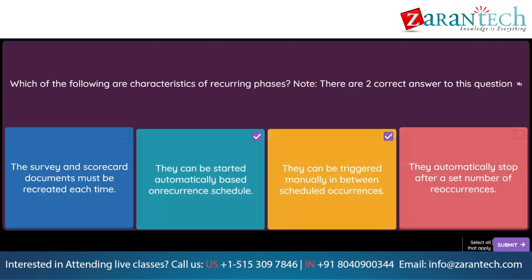Question. Which supplier data elements can be imported via SM administration? Note, there are three correct answers. Option 1: Primary supplier managers for each organization. Option 2: Approval status for tasks associated with questionnaires. Option 3: Organizations from outside of SAP Ariba. Option 4: Field mappings for modular questionnaires. Option 5: Supplier qualification statuses.